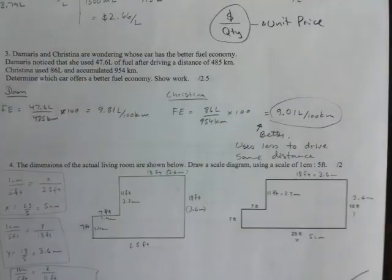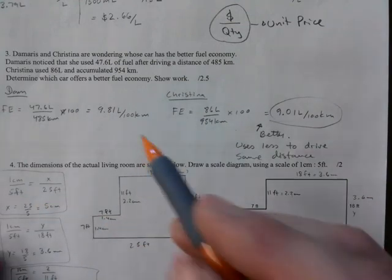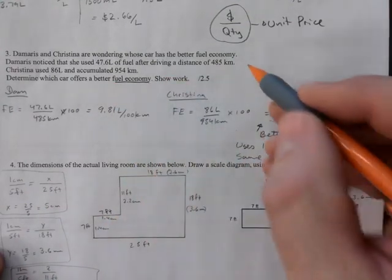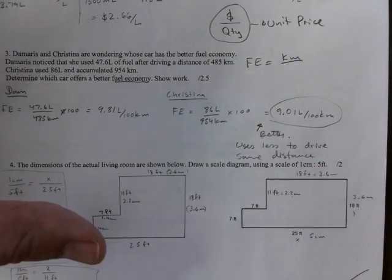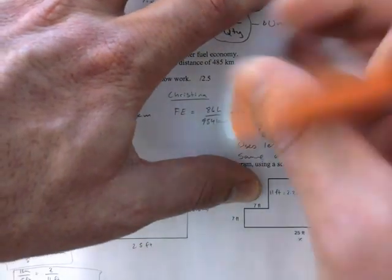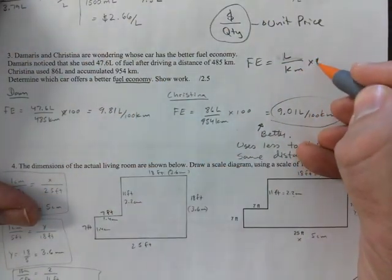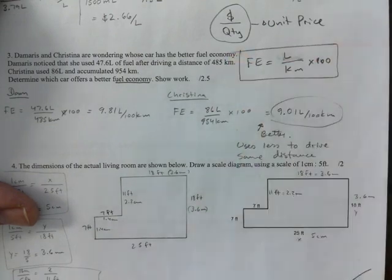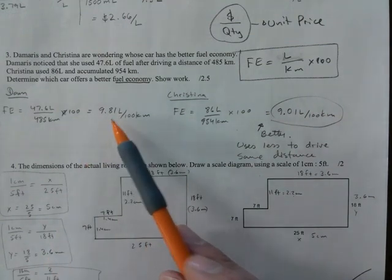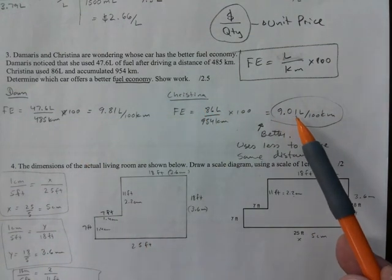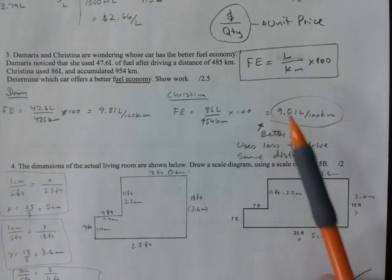Next, fuel economy. There's a formula for that: liters divided by kilometers times 100. I'm pretty sure I gave you that formula at some point. Christina has a better fuel economy because she uses less liters to drive the same distance, so this is the better one.